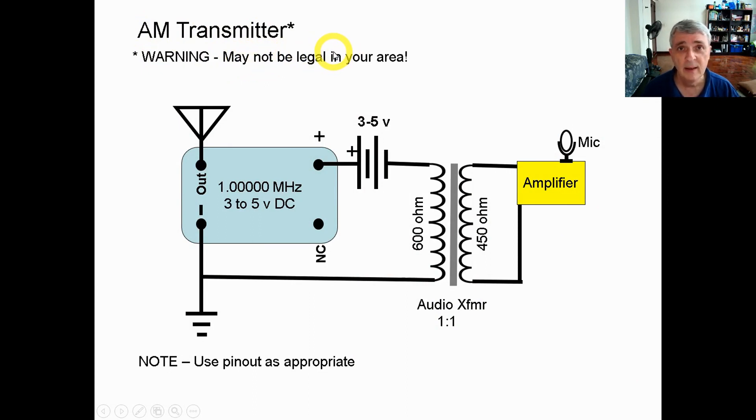It will depend on the antenna, the allowed amounts of power, and so forth. Currently in the United States, low power AM transmitters are illegal if the range is only a few meters. So again, check in your area.